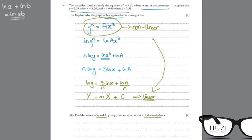We have y equals 2.58 when x equals 1.20. So, let's place n over here again. So, n ln y is 2.58. So, ln 2.58 equals 3 ln x. x is 1.2, 3 ln 1.2 plus ln a.